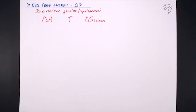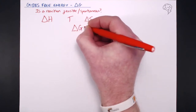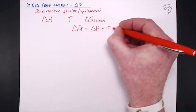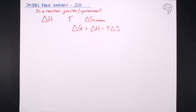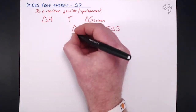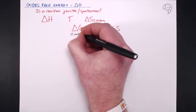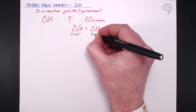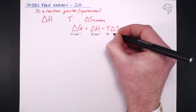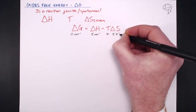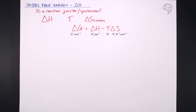So what's the equation? Delta G equals delta H minus T times delta S. It's the enthalpy change minus the temperature times the change in entropy. Units are also important: to calculate delta G in joules per mole, delta H needs to be in joules per mole, temperature needs to be in kelvin, and the standard units for delta S are joules per kelvin per mole.